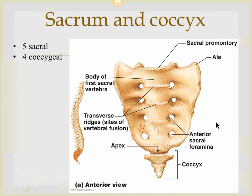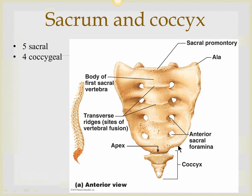The sacrum has five sacral vertebrae. The openings visible in front are the sacral foramina. The sharp edge of the sacrum is known as the sacral promontory. Between the sacrum and coccyx there is the sacrococcygeal joint.